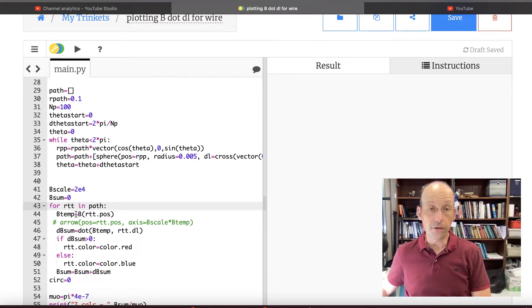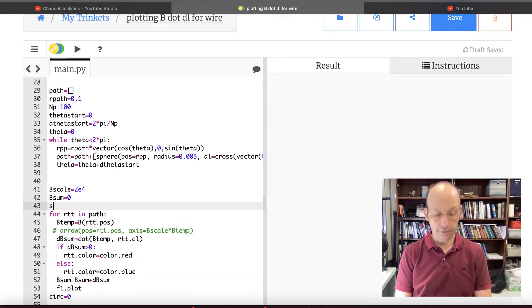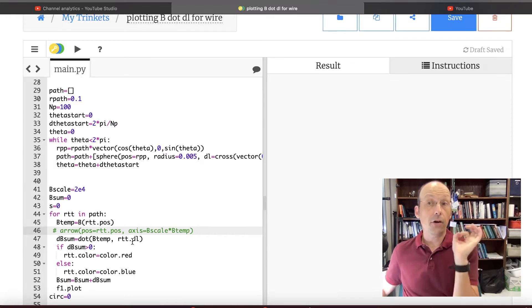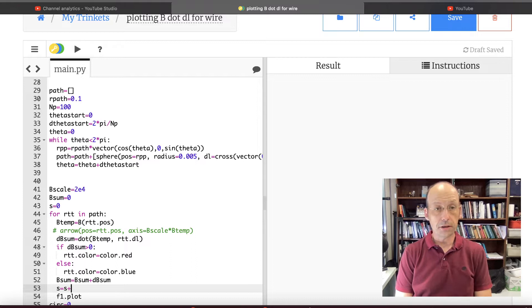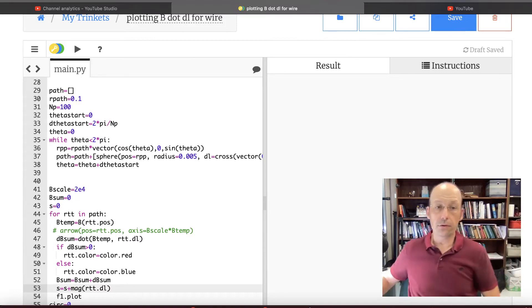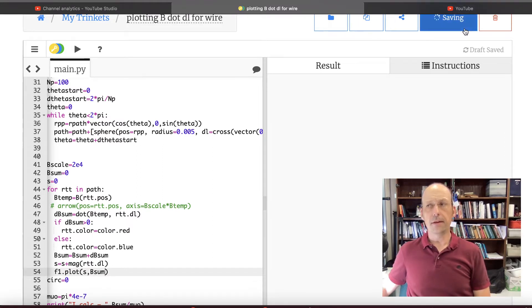Down here, I actually calculate B dot DL. So there's the magnitude, I mean, the vector magnetic field at each location. And this is the sum. And then here I'm just changing the color, which I'm going to fix in a little bit, hopefully. And so B sum is the cumulative sum of the B dot DLs as I go around. And that's what I want to plot. So let's say F1 dot plot. I guess I need a value of s. Let's do this. S equals 0. And then down here, rt is a sphere in my path. And rt dot DL is the vector length of that. So if I say s equals s plus mag of rt dot DL. So that's the magnitude of that. And if I add it to that list, that actually gets a cumulative path around the whole thing. I think that should work. Okay, so then I'm going to plot s and B sum. Let's see if that works.